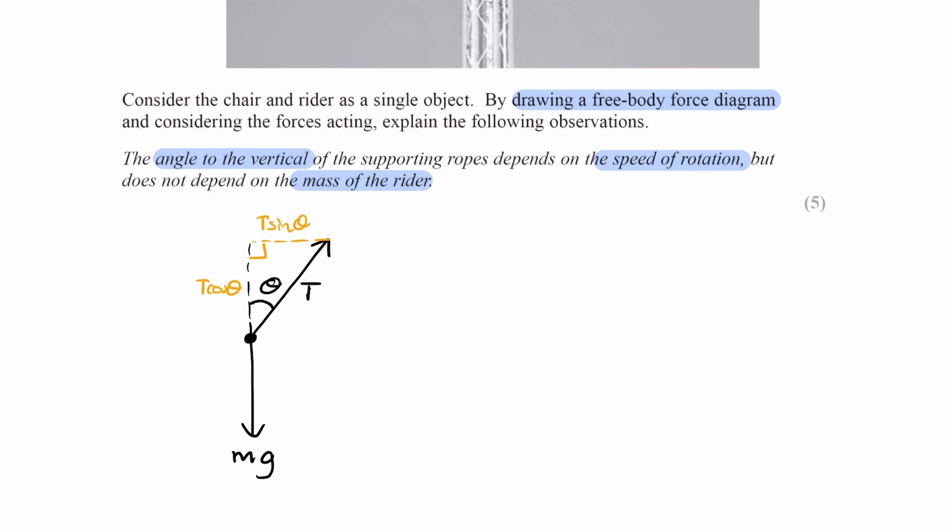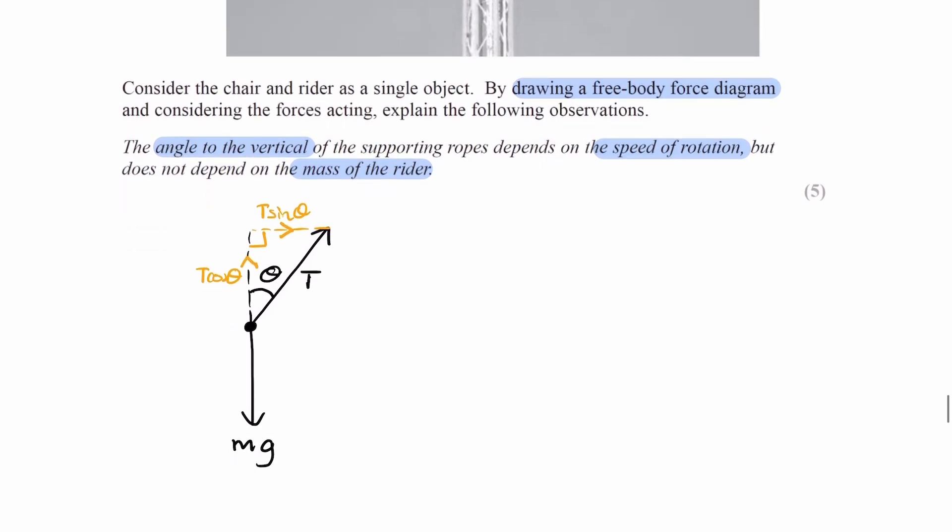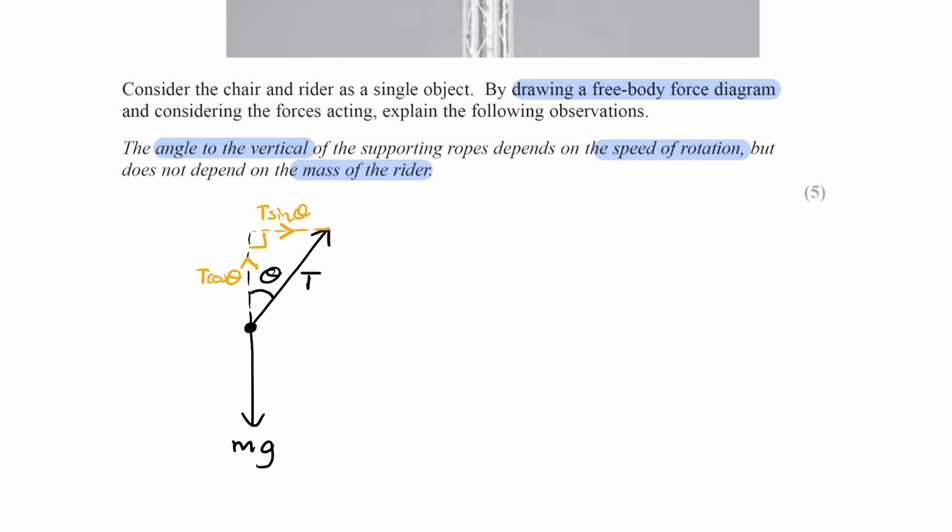So T cos theta acts upwards, that's the vertical component of tension, T sin theta acts towards the right, which is the horizontal component of tension. So T sin theta is equal to mv squared over r. Again, that's the centripetal force. I'll call that equation 1.